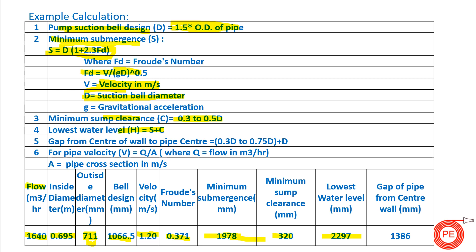As mentioned, designers take a margin of 10 to 15 percent on top of the lowest water level H = S + C so that the pump does not go into dry run even in the event of a logic failure. For parameter B — the gap from the center wall of pipe to the back wall — the calculation is 0.3D + 0.75D + D, where the additional D is added for this large diameter pipe to make the design safe. This gives B = 1386 mm.